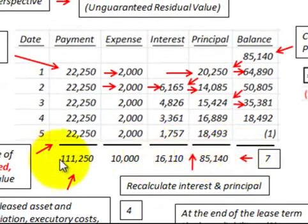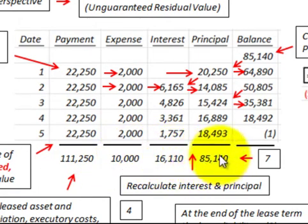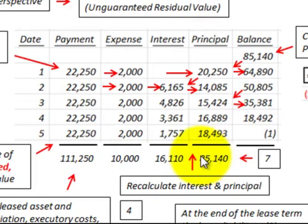To summarize the totals for the unguaranteed residual value scenario: executory expenses, interest expense, and principal amount are all recalculated based on not including the $4,500 residual value, since it is unguaranteed.